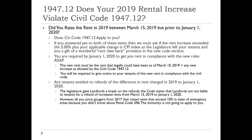What happens if you raised the rents in 2019 and they went over the 5% plus CPI index rule? The golden question is: did you raise rents between March 15th, 2019, but prior to January 1st of 2020? Does Civil Code 1947.12 apply to you? If yes, and you raised the rents more than the permitted 5% plus the applicable CPI change — or in cases where there's no federal index, if you went over 8.34% — the legislature left a rent clawback provision: you will be required by January 1st of 2020 to get your rents in compliance.